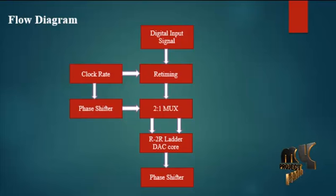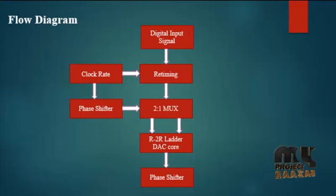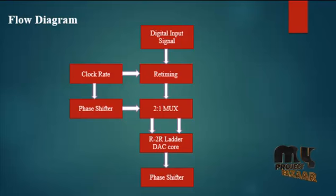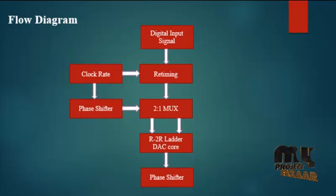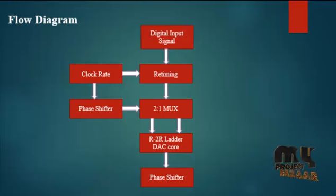In the retiming block, it is implemented using 12 different D flip-flops. In each D flip-flop, the input is the digital input signal and the selection logic is the clock pulse. The output of the retiming D flip-flops is then directly applied to the 2-1 multiplexing block.